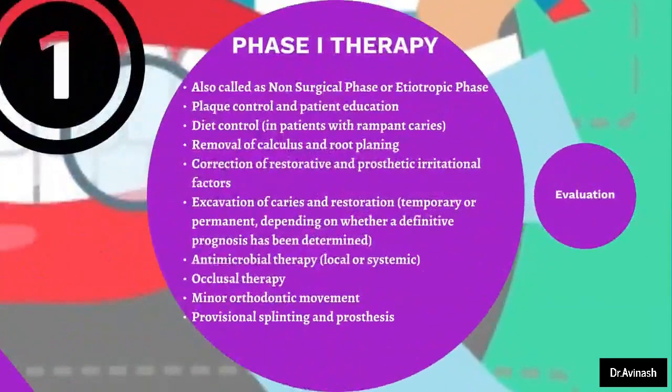Moving on to the next phase — phase 1 therapy, which is also called the non-surgical phase or etiotrophic phase, meaning that we treat the etiology of the condition. Treatments performed in this phase include plaque control and patient education, which includes teaching brushing technique and performing scaling and root planing. Diet control is also addressed in case the patient has rampant caries, and we counsel the patient to have an appropriate diet.